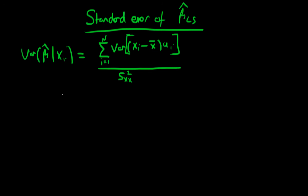Hi there. Last time we got to this stage in deriving the variance of beta hat least squares, and we're going to try and take this a few steps further. First of all, we are going to assume that we have homoscedastic errors. Remember, that's one of the Gauss-Markov assumptions.